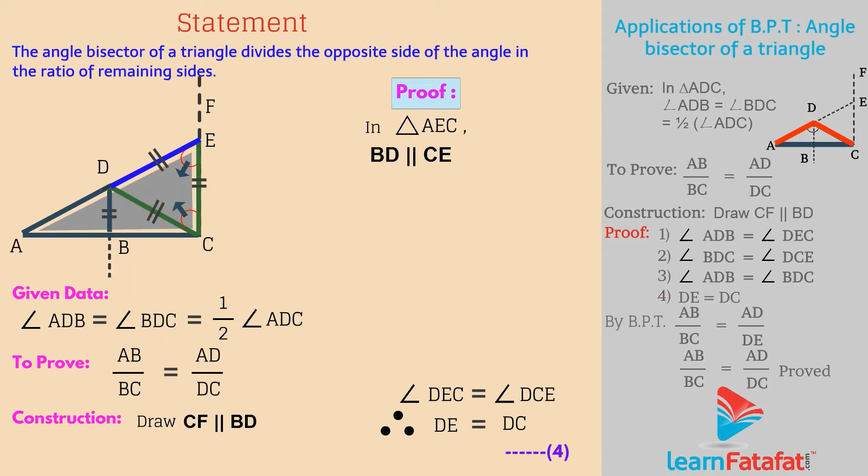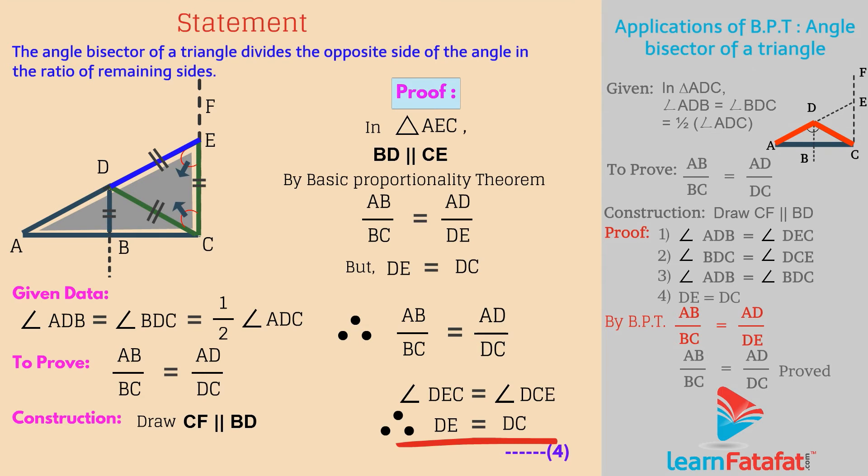Now consider triangle AEC in which BD is parallel to CE. So, by basic proportionality theorem, AB divided by BC is equal to AD divided by DE. But, as DE is equal to DC, therefore AB divided by BC is equal to AD divided by DC.